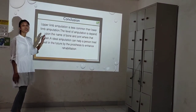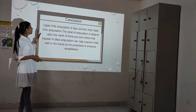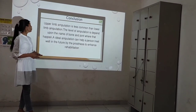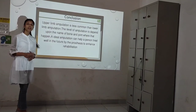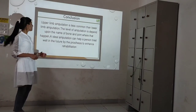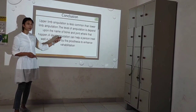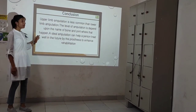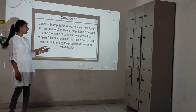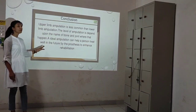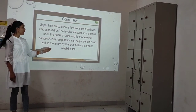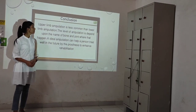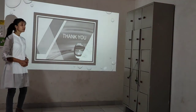In conclusion, upper limb amputation is less common than lower limb amputation. The level of amputation depends on the name of the bone and the joint where it occurs. An ideal amputation can help a person function well in the future using a prosthesis to enhance rehabilitation. Thank you.